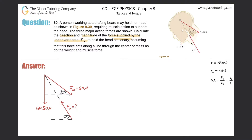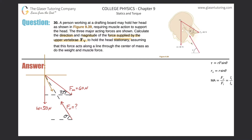For example, if you think about a coordinate system with the origin at the top, and consider the net force between the weight and the force of the muscles, that resultant force should be pointing somewhere between those two vectors. That resultant would be the force of the head acting on the upper vertebra.